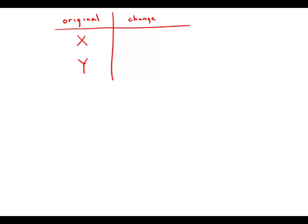If we want to increase by 10%, what we have to do is change this to a decimal — 0.1 — then add 1, so we get 1.1. Now what we've created is called a multiplier. And so if we multiply X by 1.1, that represents a 10% increase in X.